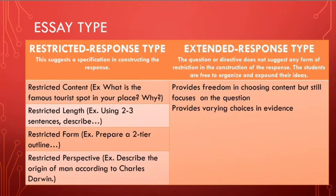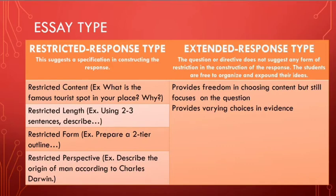For the restricted response type, the question suggests specifications in constructing the response. You restrict the content — for example: 'What is the famous tourist spot in your place? Why?' Here the content is restricted to the learner's community. We also have restricted length: 'using two to three sentences describe...' or 'using one paragraph describe...' We also have restricted form — for example, 'prepare a two-tier outline,' where the exact format of answering is specified.